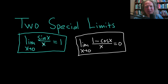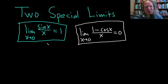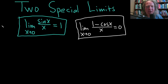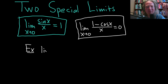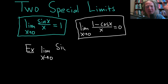Let's go ahead and do a bunch of examples practicing using these special limits. They're not hard to use, but they do require a little bit of finesse. Let's start off with a simple example: the limit as x approaches 0 of sin of 2x over x.